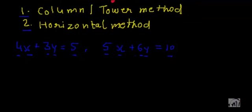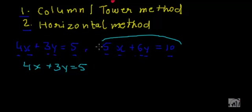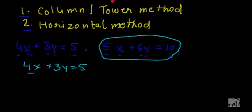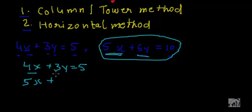what we have to do is first write the first equation. Let me rewrite the first equation: 4x plus 3y equal to 5. Now I'll write the second equation below this first equation in such a way that the variable parts — the terms with the same variable — are aligned. So I'll align 5x with 4x, then 6y with 3y, and the equal to sign should also align with 10.